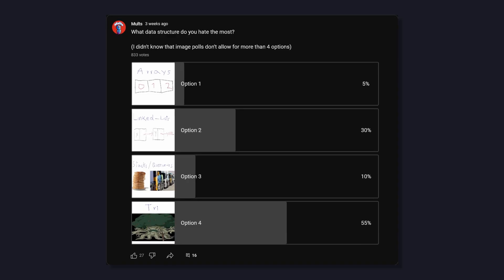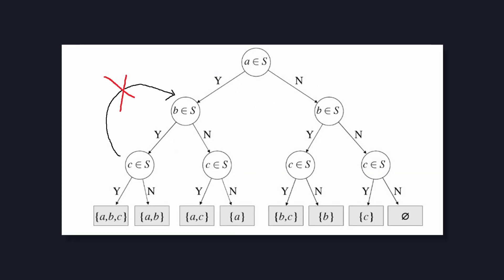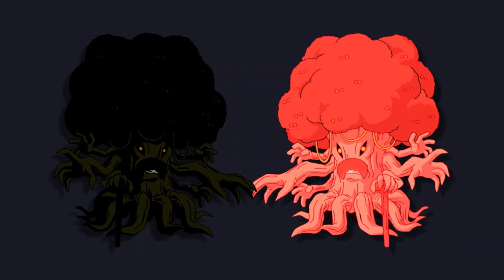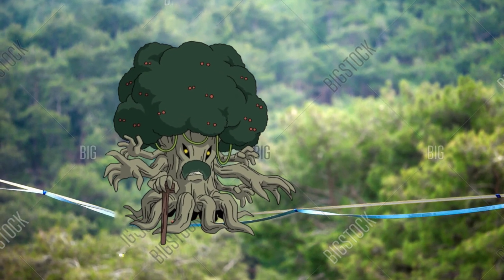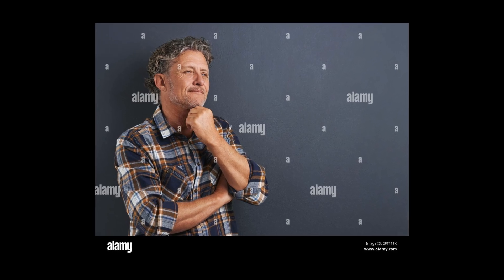Trees are very scary, at least to me. They're also one of the most hated data structures according to a poll I had a few weeks ago. In computer science, a tree is a data structure that consists of many nodes connected in a parent-child relationship. A parent can have many children, but a child can only have one parent. The thing that makes trees scary is that there are many different types — binary search trees, AVL trees, red-black trees, and many other types. Some trees are also balanced trees, meaning the height of the left and right subtrees of every node differs by at most one. But honestly, 90% of the time you'll probably just get asked a DFS or BFS question.